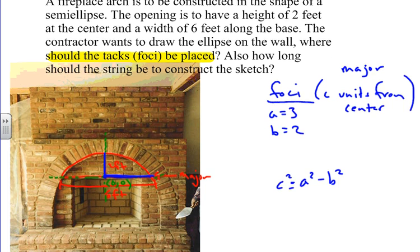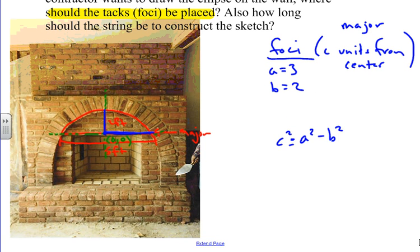When we go over here, we're going to have A squared, which would be 9, minus 4, equals C squared. So C squared is going to equal 5, and C would equal the square root of 5. So roughly the square root of 5 units from the center.